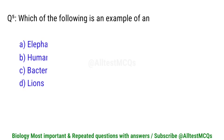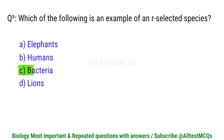Question number 5. Which of the following is an example of r-selected species? Right option is C. Bacteria.